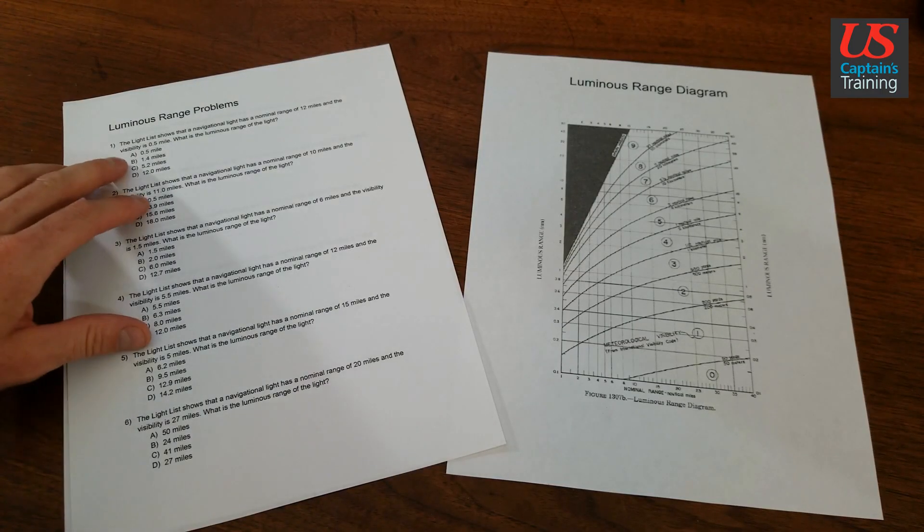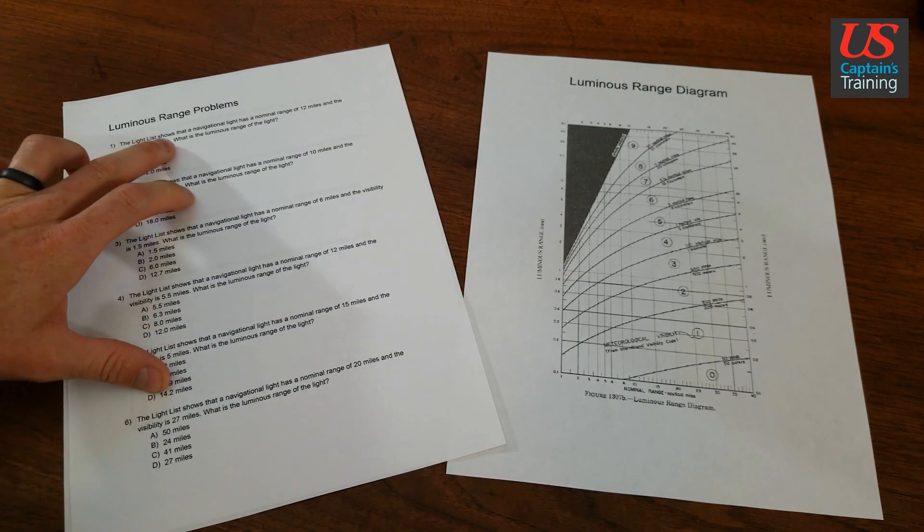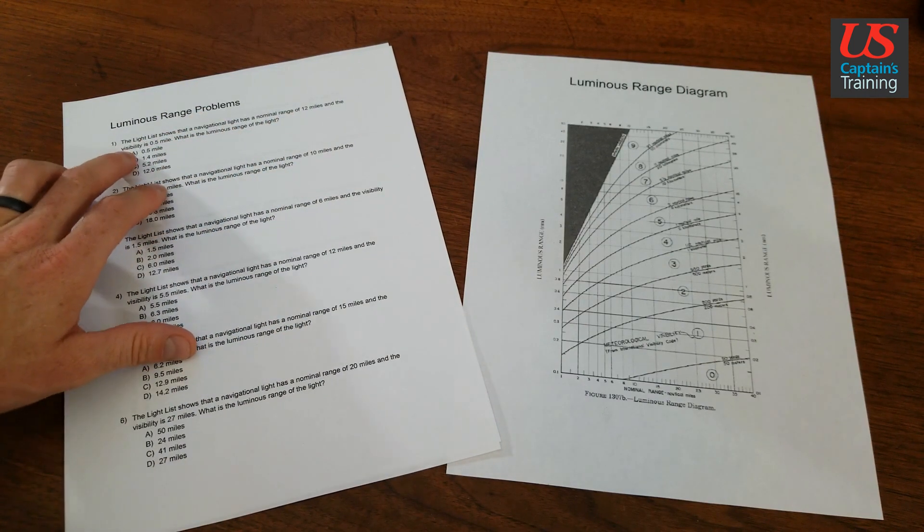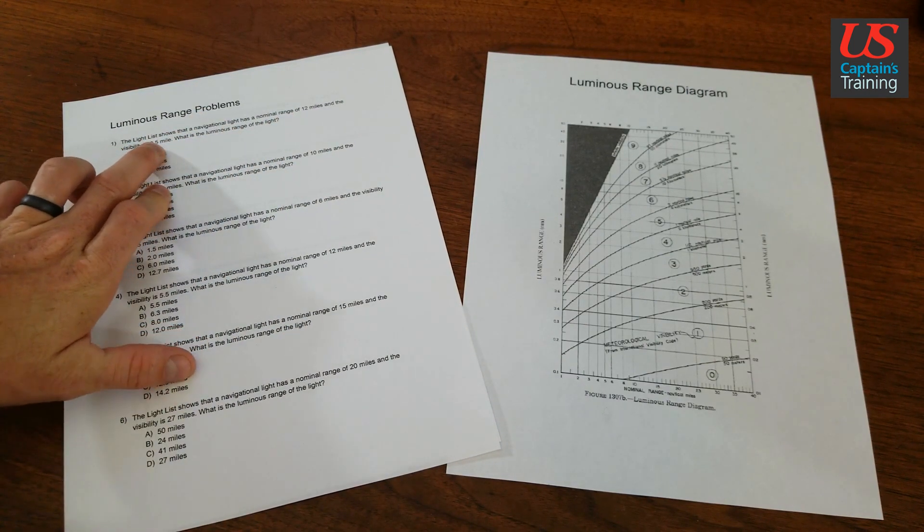Luminous Range practice problem one. The light list shows that a navigational light has a nominal range of 12 miles and a visibility of 0.5 miles. What's the luminous range?